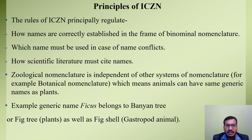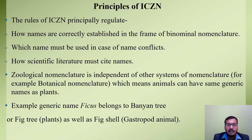An important point is that geological nomenclature is independent of other systems of nomenclature, such as botanical nomenclature. This means animals can have the same generic names as plants. For example, the generic name Ficus belongs to the banyan tree or fig tree, which are plants. Interestingly, the generic name Ficus also belongs to the fig shell, which is a gastropod animal.